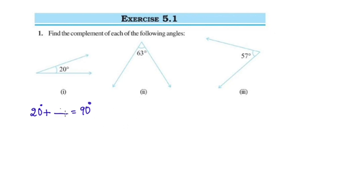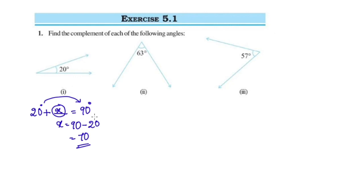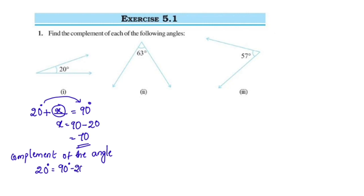For the first angle, 20 degrees: x plus 20 is equal to 90. So x is equal to 90 minus 20, which equals 70 degrees. The complement of the angle 20 degrees is equal to 90 degrees minus 20 degrees, which equals 70 degrees.